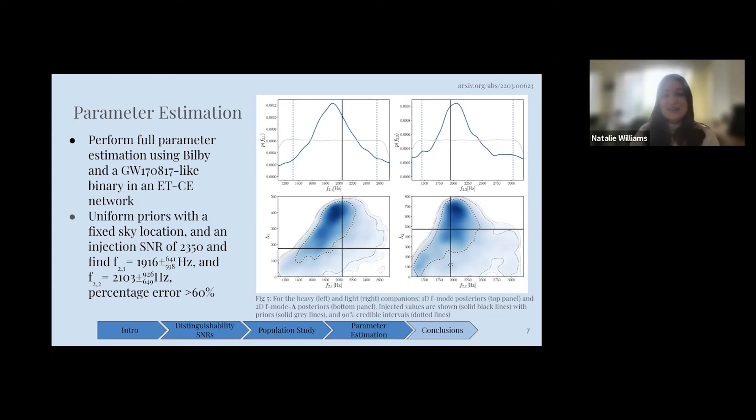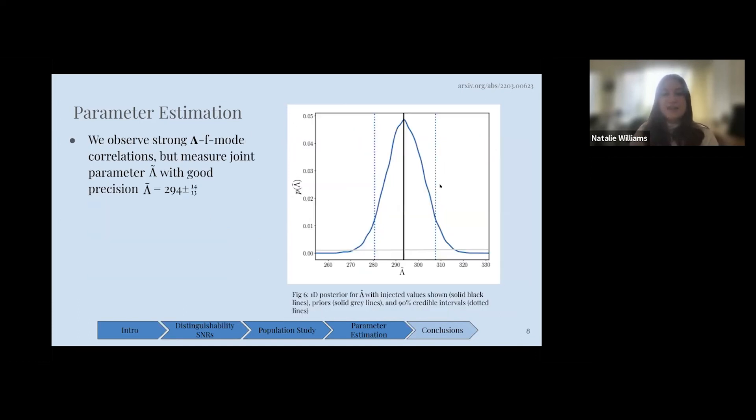Although we tend to measure these dimensionless deformabilities individually, it is known that they are much better measured as a joint constraint. This is the joint parameter for the dimensionless deformability, much like we have the chirp mass and chi-effective for the spin. It can be much better to measure these with joint parameters. Unlike in the last slide, where we measured it much poorer, we measure our tidal deformability much better with a joint parameter.